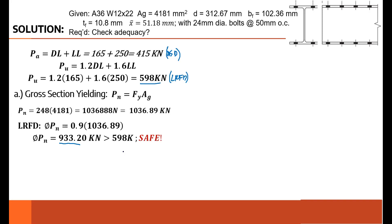For ASD, the PN divided by the safety factor of 1.67 for GSY gives an allowable strength of 620. The allowable strength is 620, the load is 415. So it passes again. This means it can handle gross section yielding in both LRFD and ASD.